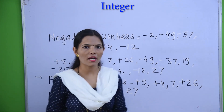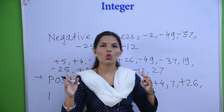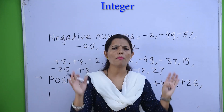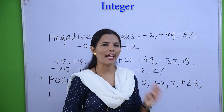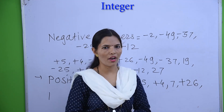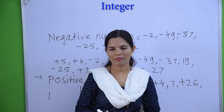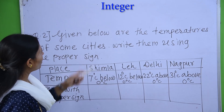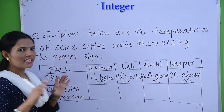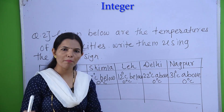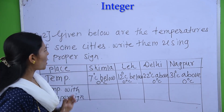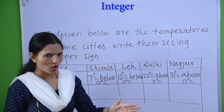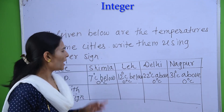If you have 2 marks or 4 marks on this question, you can easily identify negative and positive numbers. Let's see your second question. In the second question, you are given the temperatures of some cities, and you have to write them using proper signs — positive sign or negative sign depending on the temperature.